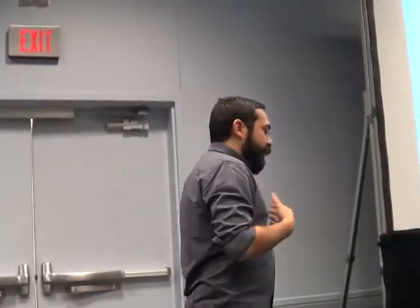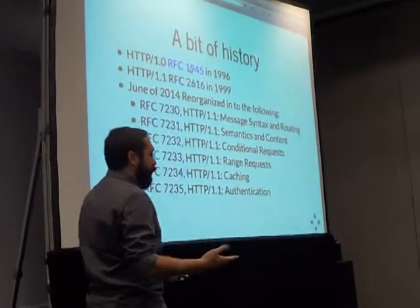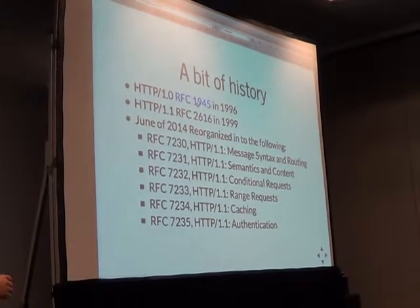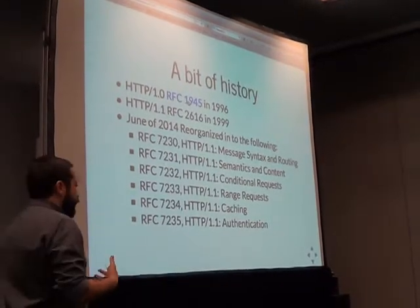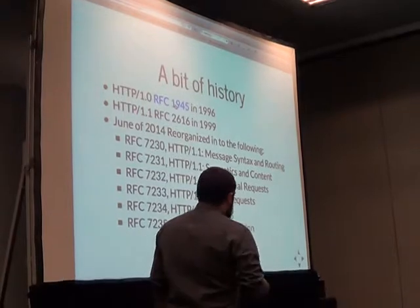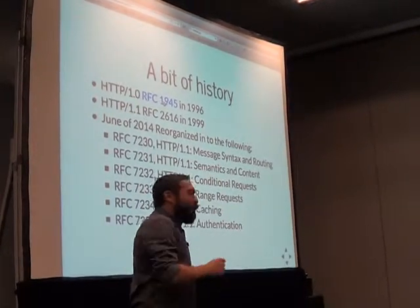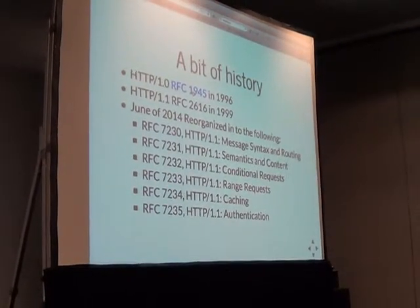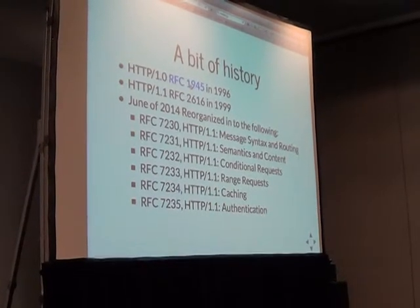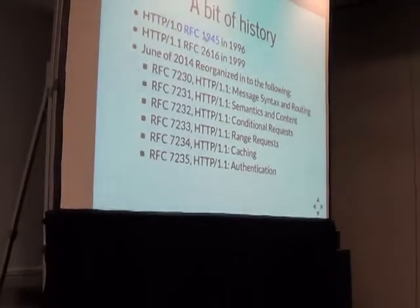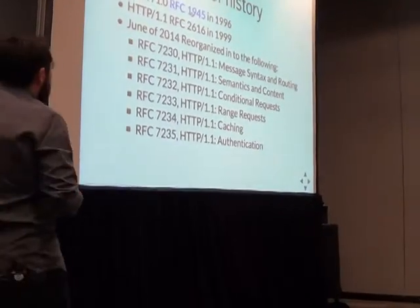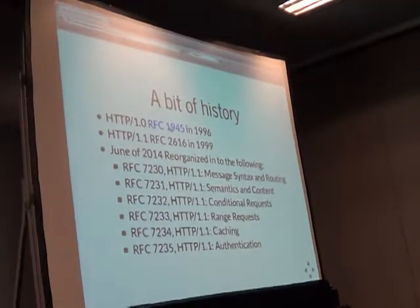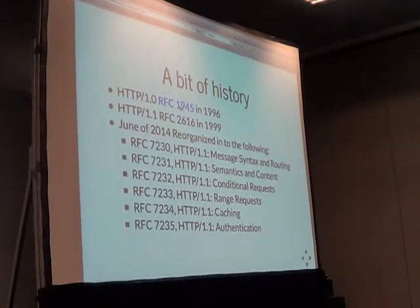A bit of history. If you pull up the slides, all of these link back to the actual RFCs. For those unfamiliar, RFC is a Request for Comments — it basically describes the way the protocol should be implemented. A key point: 'should be implemented,' because there can be multiple interpretations of an RFC. Just think about the way we render HTML in Firefox, Chrome, IE. Starting off in 1996 with RFC 1945, which defined the first protocol for HTTP 1.0.